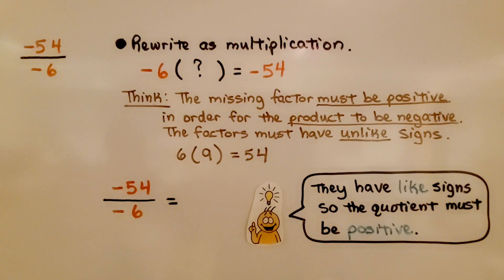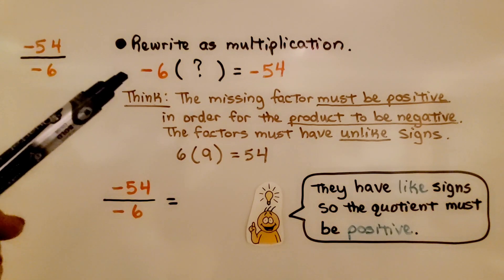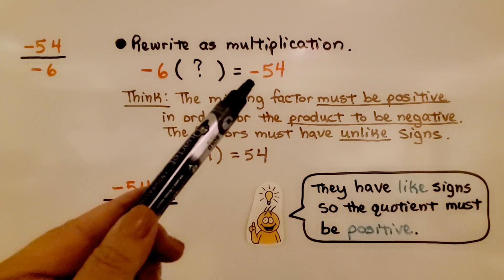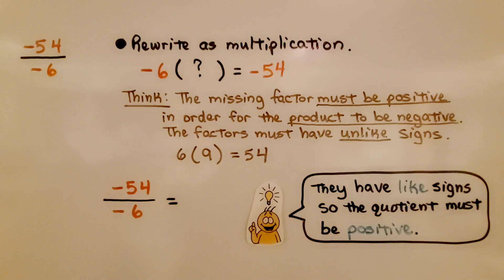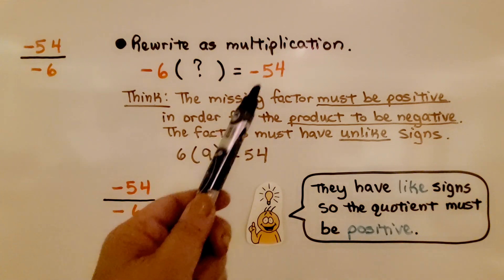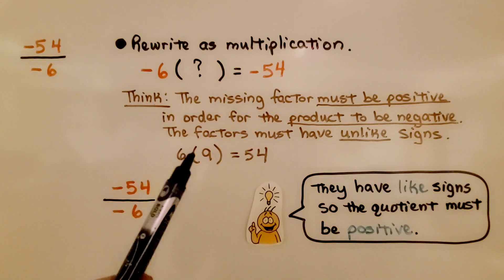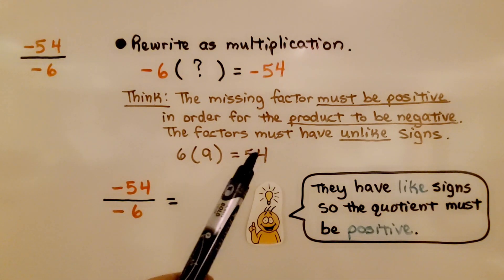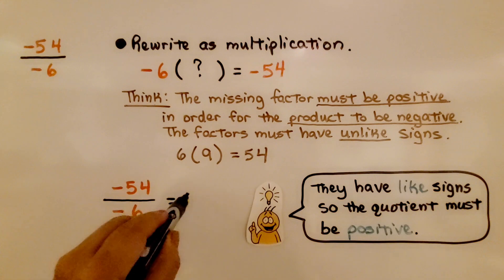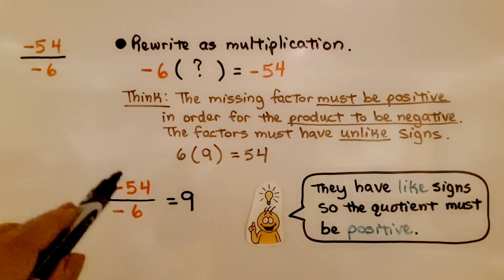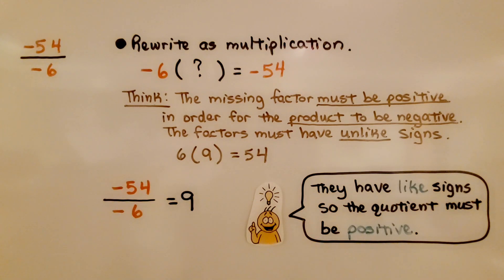Here our division problem is negative 54 divided by negative 6. We rewrite it as multiplication. We have a negative 6 times some number is equal to negative 54. We think the missing factor must be positive in order for the product to be negative. The factors must have unlike signs. And 6 times 9 is equal to 54. It must be 9, a positive 9. They have like signs, so the quotient must be positive.